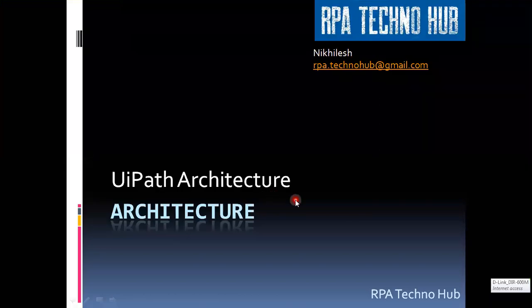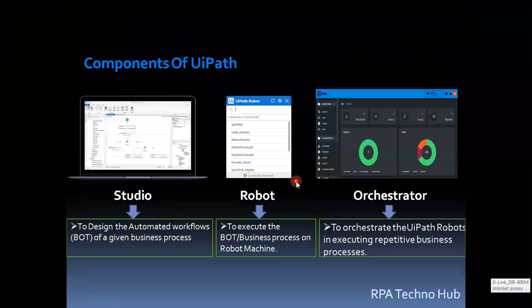Hello everyone, welcome to my channel. Today I would like to explain about UiPath architecture. Before we understand the architecture, we need to know the three important components of UiPath: those are Studio, Robot, and Orchestrator.